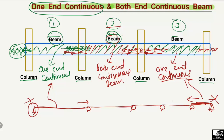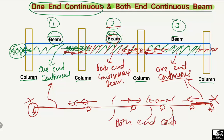The middle beams — whichever beams are in the middle — are continuous on both sides. Similarly, this beam is continuous on both sides, and this beam is also continuous on both sides. So all middle beams are known as both-end continuous beams. This was the main difference between the one-end continuous and both-end continuous beam. Hope you guys understand. Don't forget to subscribe to our channel. Thank you for watching.